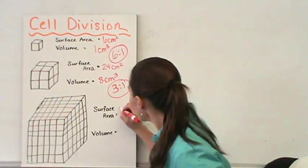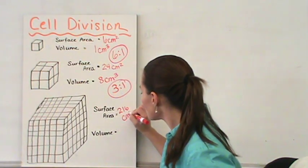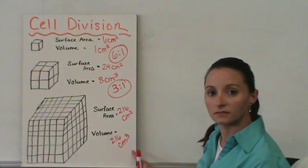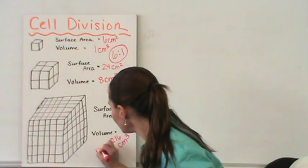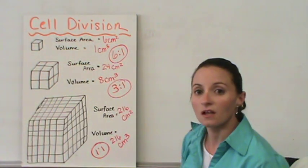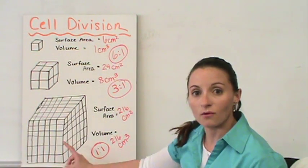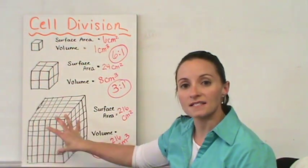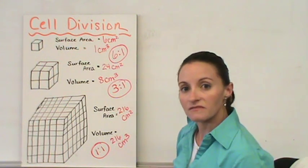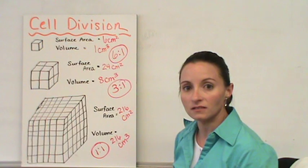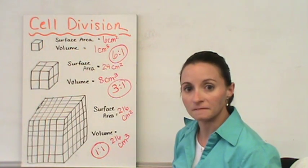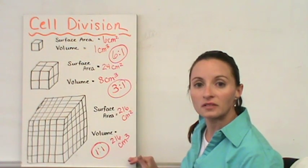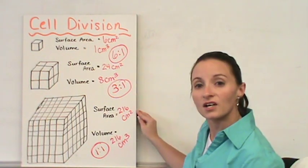A six centimeter cube box has a surface area of 216 centimeters squared and a volume of 216 centimeters cubed, which gives us a one to one ratio — even higher demands on that cell membrane, which it may not be able to handle. So when a cell divides, it takes the same volume, divides it in half, and now has a larger surface area to volume ratio because the smaller the cell, the better its ability to exchange materials. Cell division helps with this.